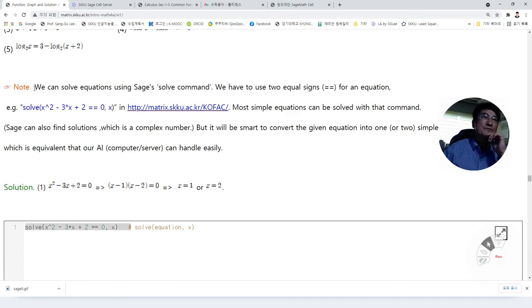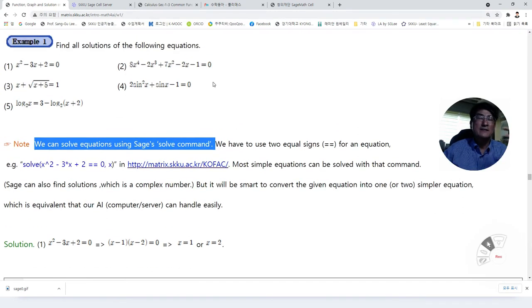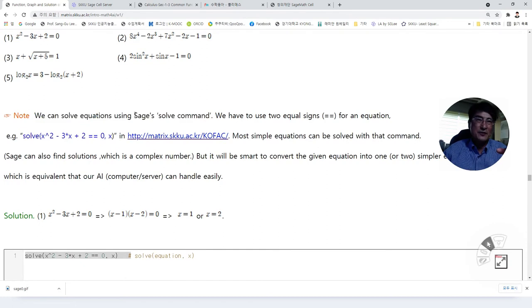Now, we can solve equations using Sage's solve command. We could solve it by factorization, by quadratic equations, and formula for the solutions. Here, we introduce the solve command. Here, we use two equal signs for an equation. For example, solve this is equal to zero with respect to x.